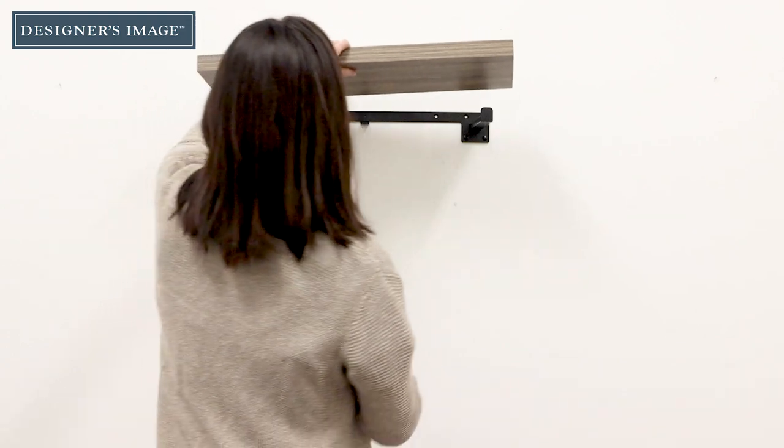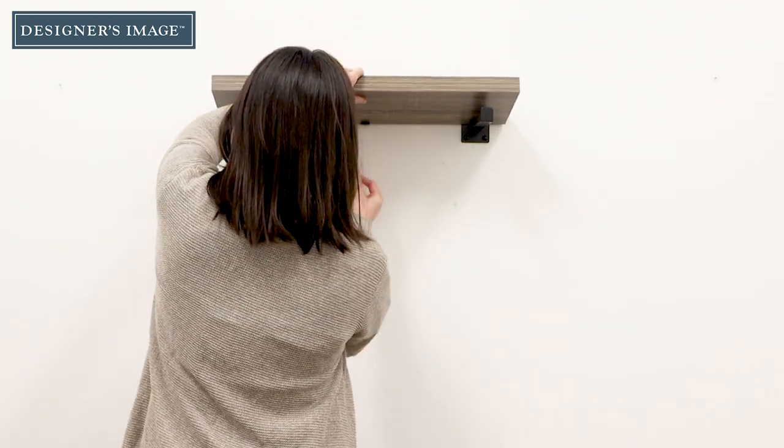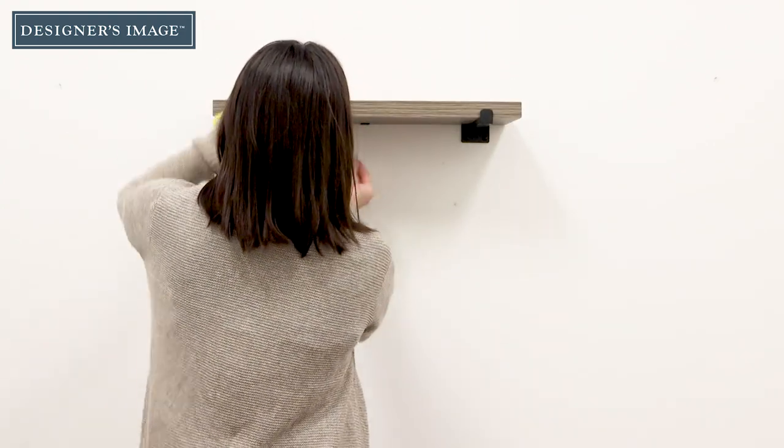Place the ledge onto the support arms. Insert the screw through the bracket into the ledge to secure.